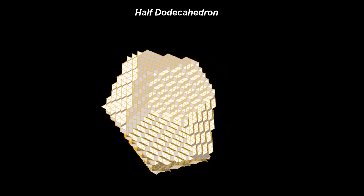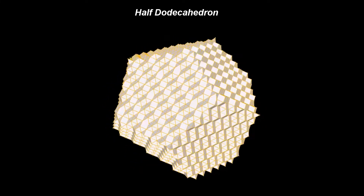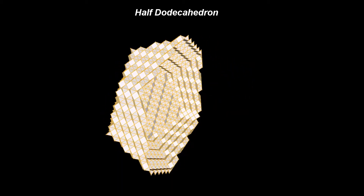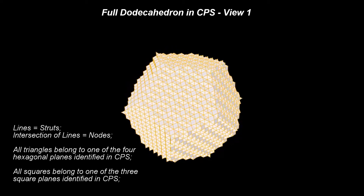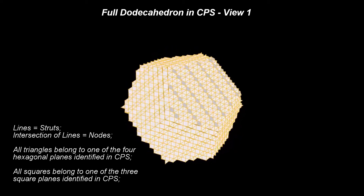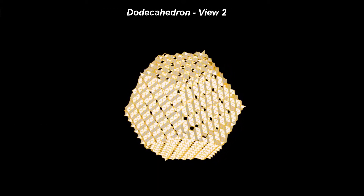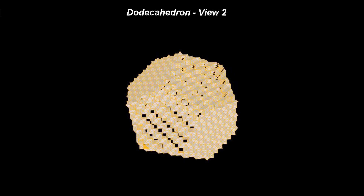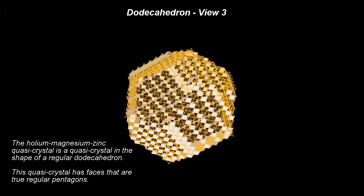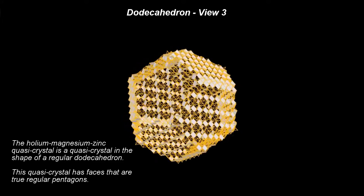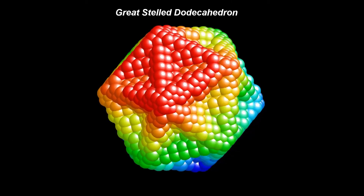The underlying lattice of the pentagonal faces is not homogeneous — the pattern of the lattice is different along different directions. We will say more about this later in these videos. The dodecahedron has two types of vertices, which is the consequence of the way three pentagonal faces join to form a vertex. The holmium-magnesium-zinc quasicrystal is a quasicrystal in the shape of a regular dodecahedron, and it has faces that are true regular pentagons.